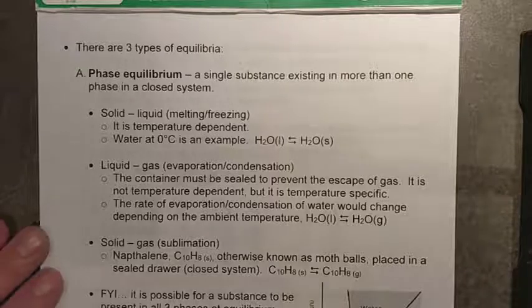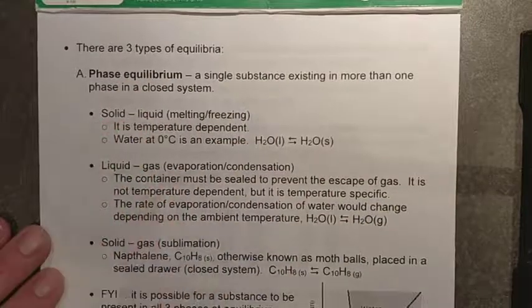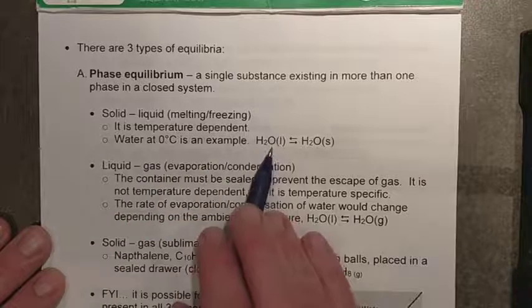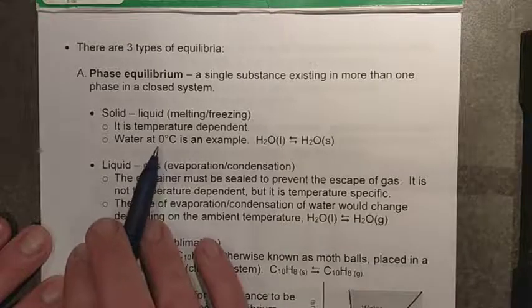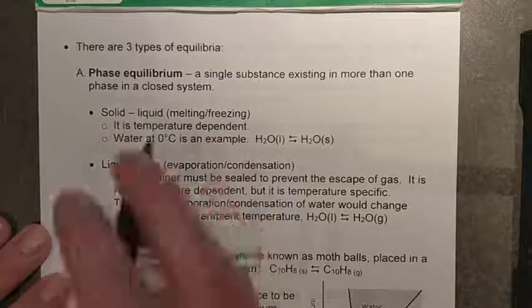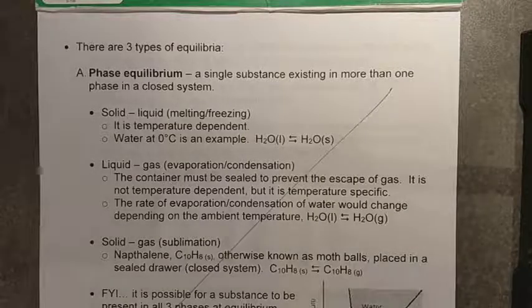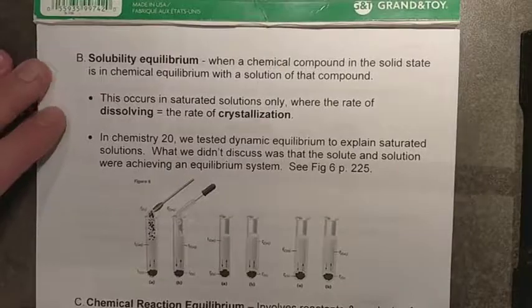When we get into equilibria there are three different types. Now if we had the same time and resources available in a regular classroom we would go through all of them, but phase equilibrium — which is really just moving between different phases: solid, liquid, and gas, such as melting or freezing — can achieve an equilibrium. For example, water at exactly zero degrees would melt at the same rate that it freezes. No questions on phase equilibrium are going to make it to your chapter 15 quiz.